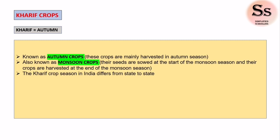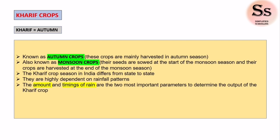The sowing season differs according to the arrival of the monsoons in different parts of the country. For example, in southern states like Kerala and Tamil Nadu, seeds are generally planted towards the end of May, whereas in the northern regions like Punjab and Haryana, the seeds are planted around June. These crops are highly dependent on rainfall patterns; the amount and timing of rain are the two most important parameters to determine the output of Kharif crops. These crops grow well in rain-fed areas with hot and humid climates.